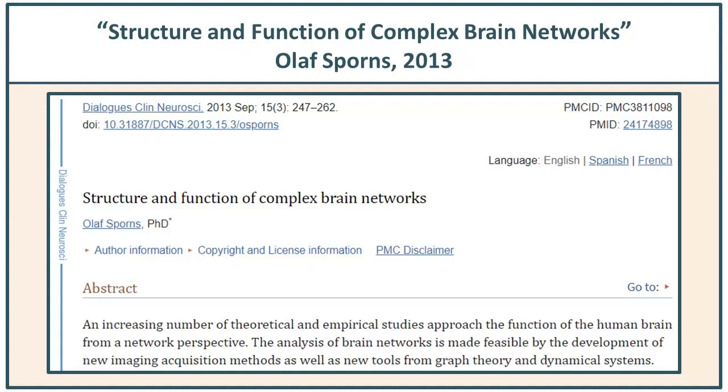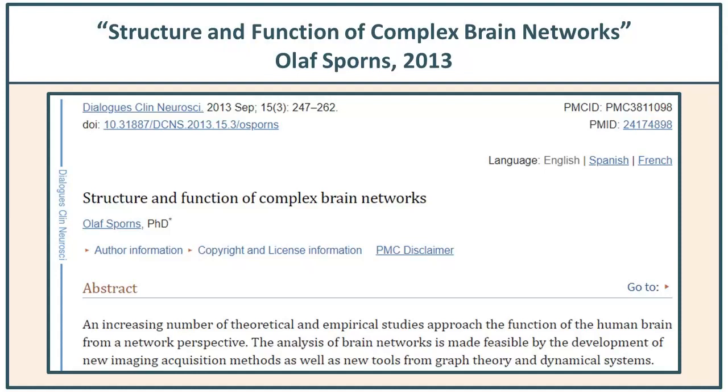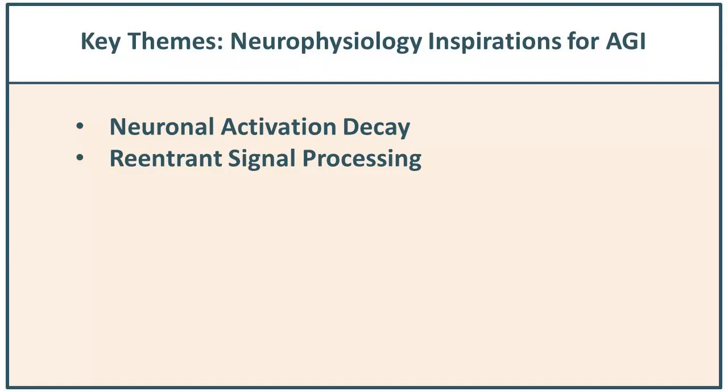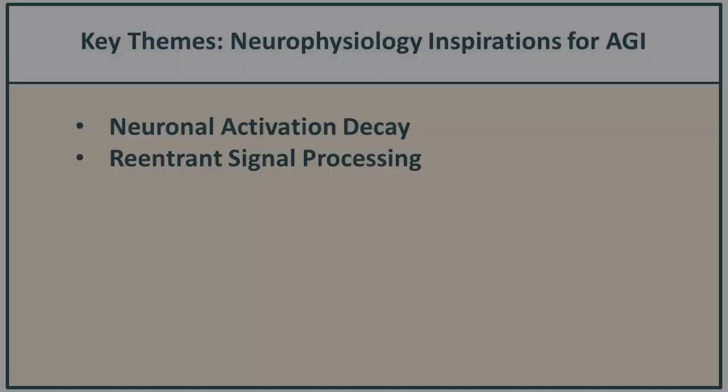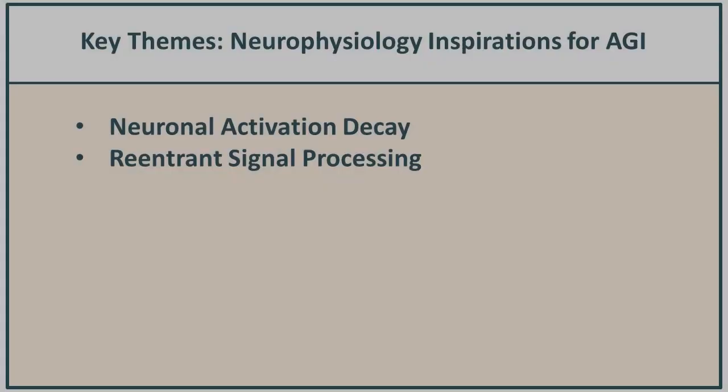So let's sum up what we've got so far in terms of the big themes or important inspirations gathered from neurophysiology. There are two so far. The first is the notion of neuronal activation decay — we've seen this most recently in liquid time constant networks. The other important notion addressed so far has been re-entrant signal processing. And we can ask: if this is so important, and if a number of very bright minds, well-funded and totally focused on creating AGI, haven't used this — the question is why? Why haven't we brought in the kinds of re-entrant signal processing that would give us a powerful AGI?